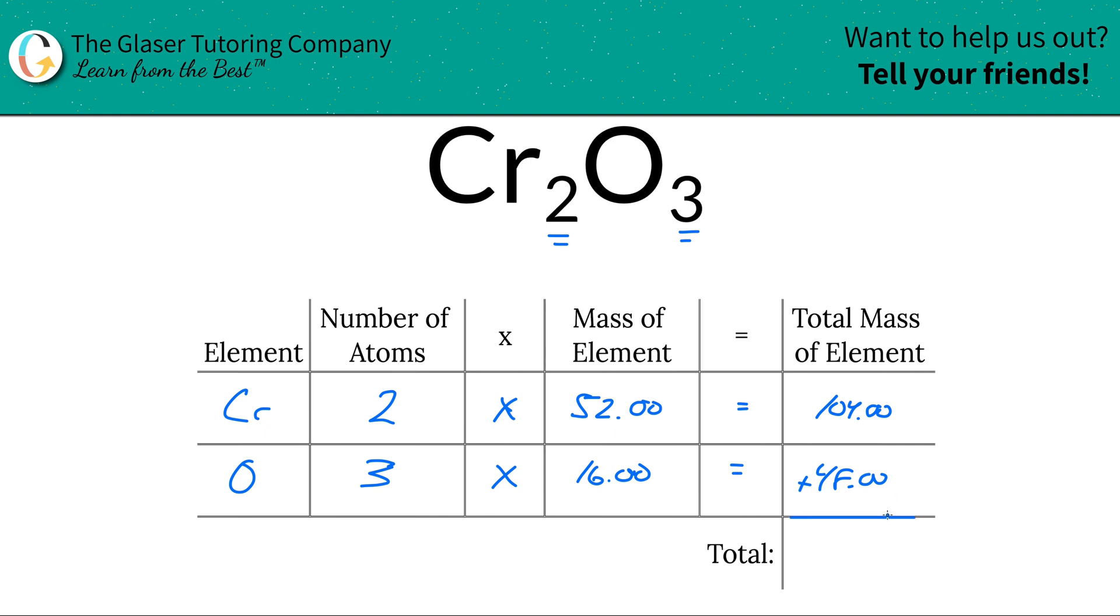Add up this column to find the total. It's going to be 152, and that was the first step - to find the mass of the entire compound. So now what we're going to do is add another column to the table and we'll simply calculate those percentages very quickly.